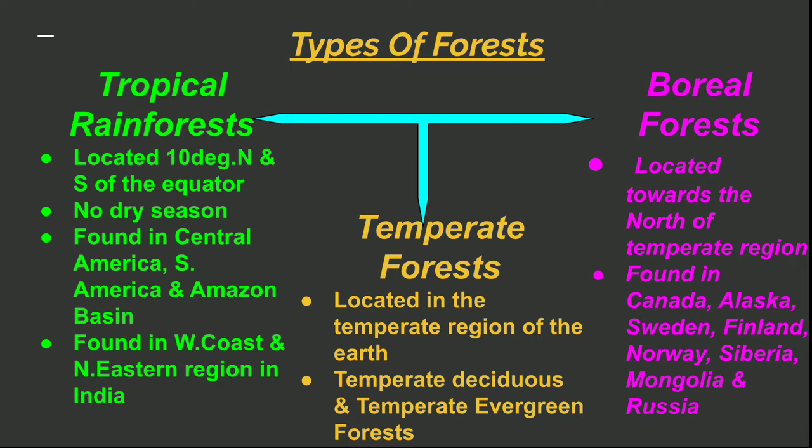There are three types of forest: tropical or temperate depending upon the temperature, wet or dry forest depending upon the rainfall, and evergreen or deciduous forest depending on the occurrence of the flora. In this chapter we will discuss tropical rainforest, then temperate forest and boreal forests, also known as taiga forests.